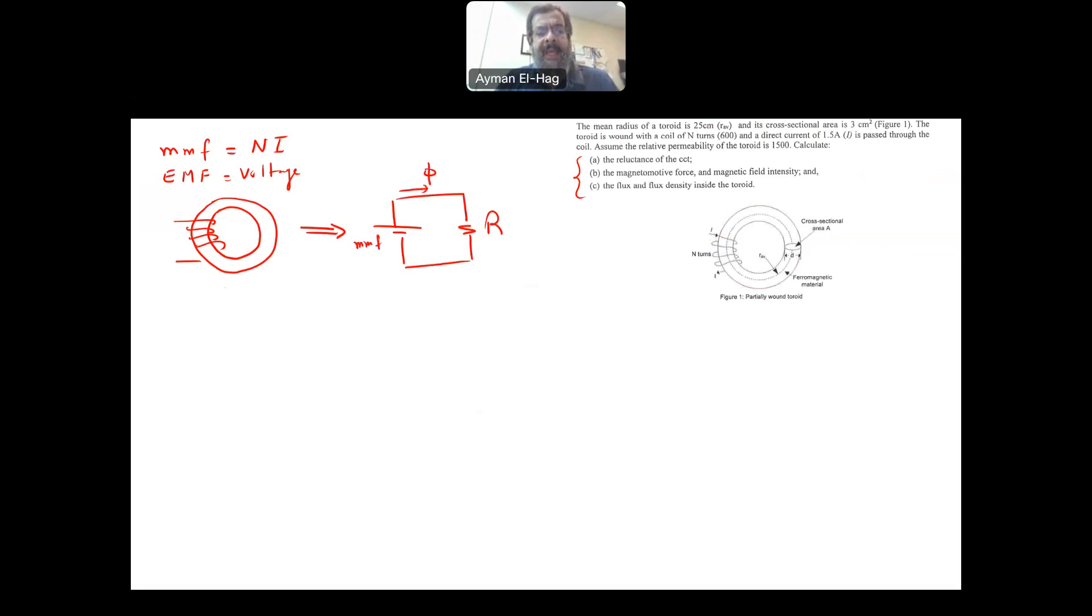And this material will have the flux and this material will have its own reluctance. This is your MMF, and this is your flux. And the relationship between these three components is the Ohm's law, like the voltage, current and the resistance where MMF is equal to the flux times the reluctance.